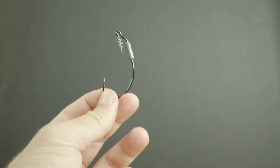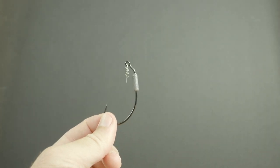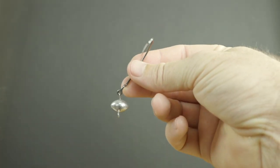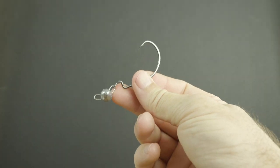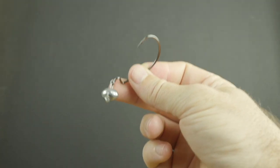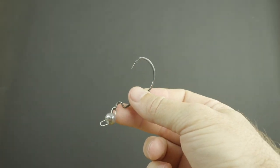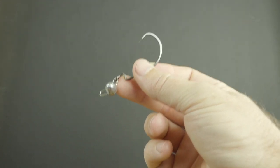The second type for the deeper water is this weedless football jig. Not many lures can be rigged weedless for deeper water - this combination, this type of jig head with these shrimp work great.